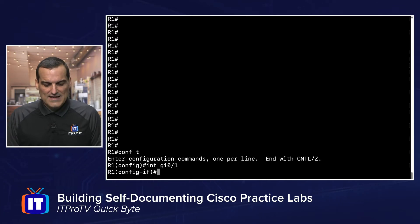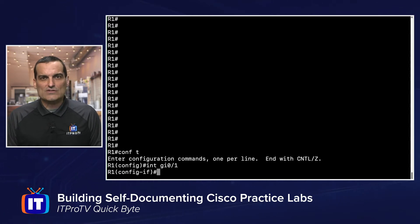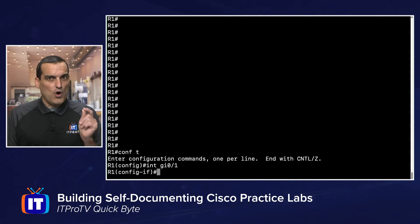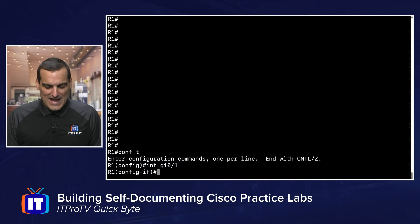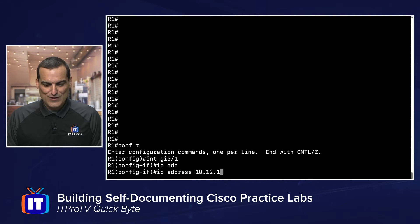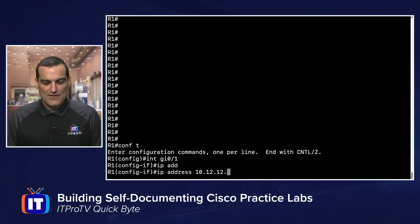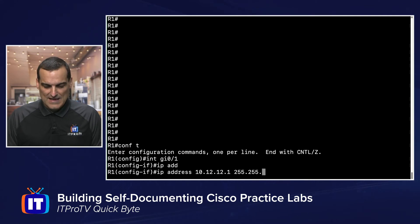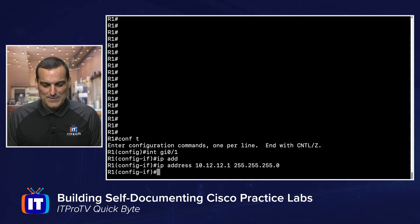So let's say the GigabitEthernet 0/1 connection goes out to the R2 device — so R1 connects to R2. How I might go ahead and IP address that is 10.1.2.1/24, using the final octet for the router ID number of this local router, with a 24-bit mask.